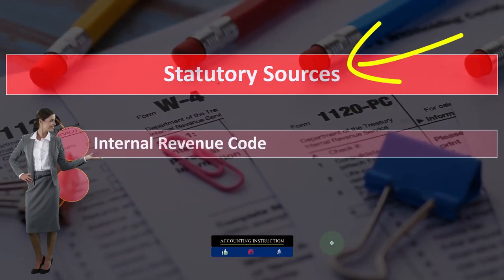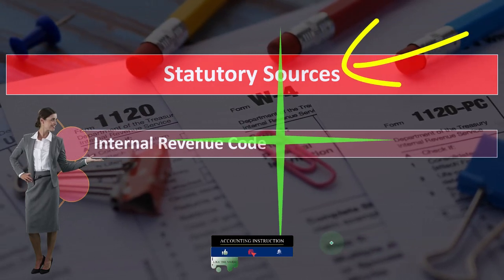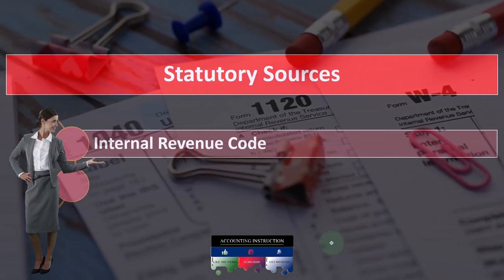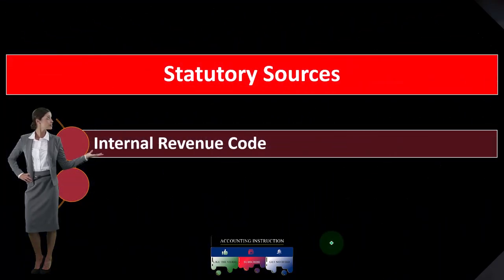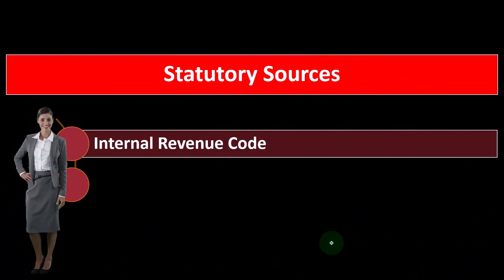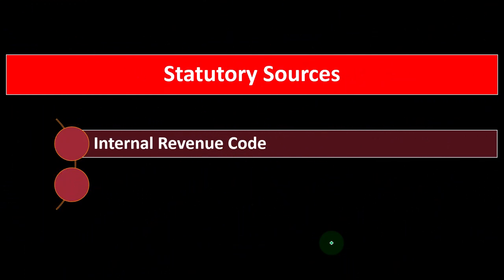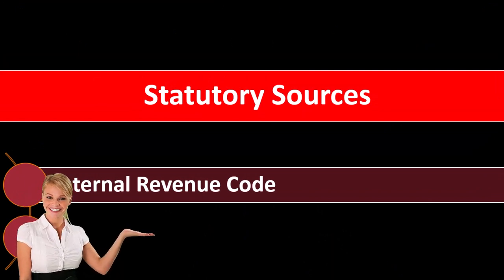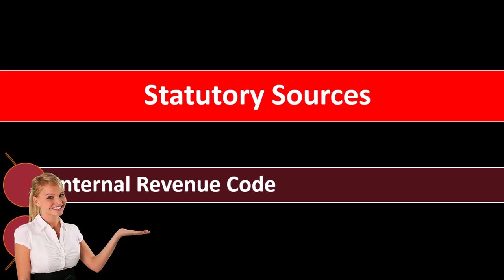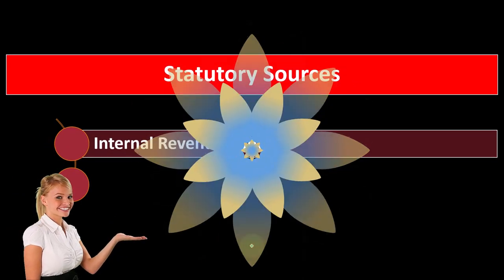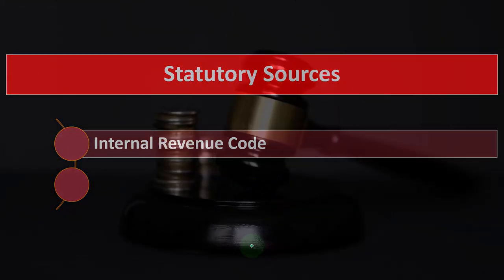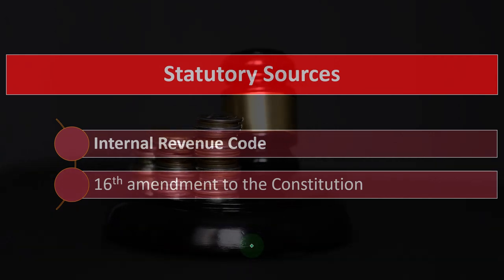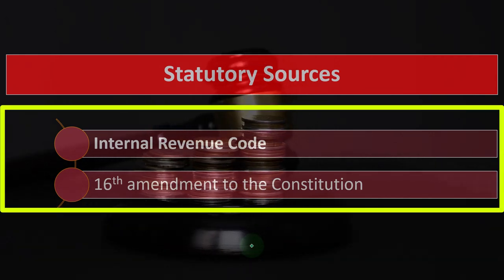The statutory source is the Internal Revenue Code itself. Like any kind of legal document, reading the Internal Revenue Code itself can be kind of tedious because of the structure of it. That's why they put other resources in place as well. But it's not too bad to read the code, and you can see how the code is basically organized by going to the code directly. If it's laid out in black and white in the law, you don't need to dig any deeper — it is what it is.